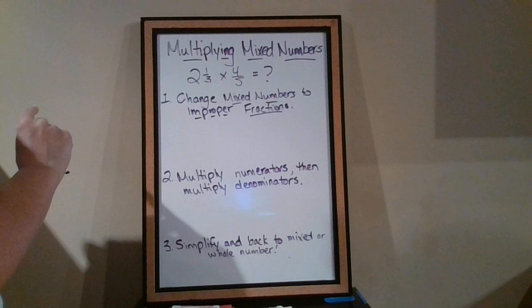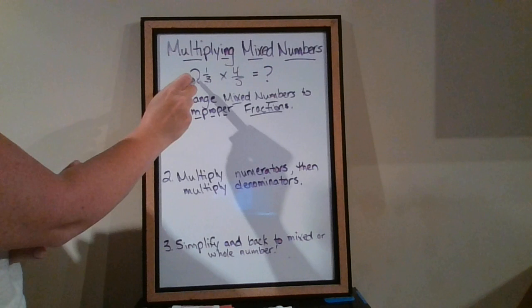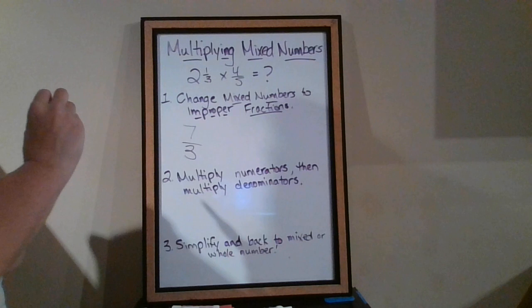What we do is we multiply the denominator by the whole number, and then add the numerator. So we're going to go three times two is six, plus one is seven, and the denominator stays the same. It's going to stay three, because we haven't changed the size of the pieces.